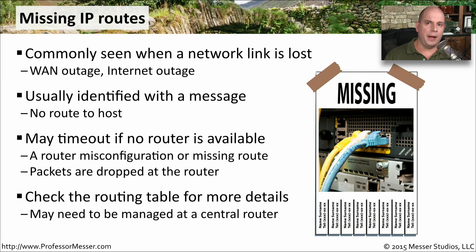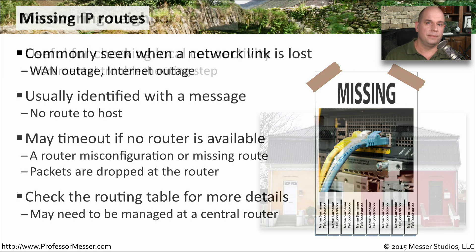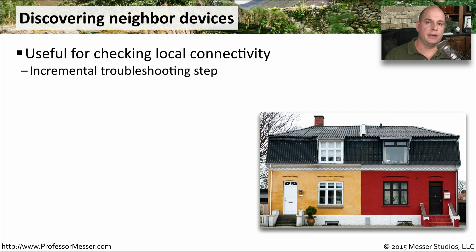If you're trying to troubleshoot a route, you'll need to look at every routing table between point A and point B — the routing table inside your device, inside every router along the path, and on the remote device as well. Another good check is to see if there's anything local to you: if there are devices on your local subnet and you can communicate with those, that helps with the troubleshooting process.